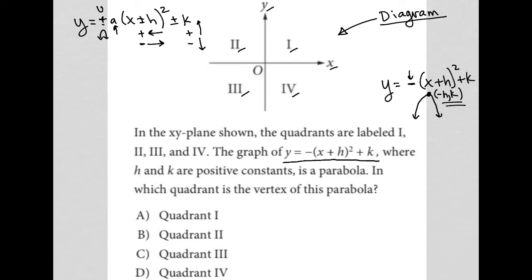So it says where h and k are positive constants is a parabola. So even if you didn't know it was going to be a parabola, the question tells you it's going to be a parabola. The last sentence says, in which quadrant is the vertex of this parabola?